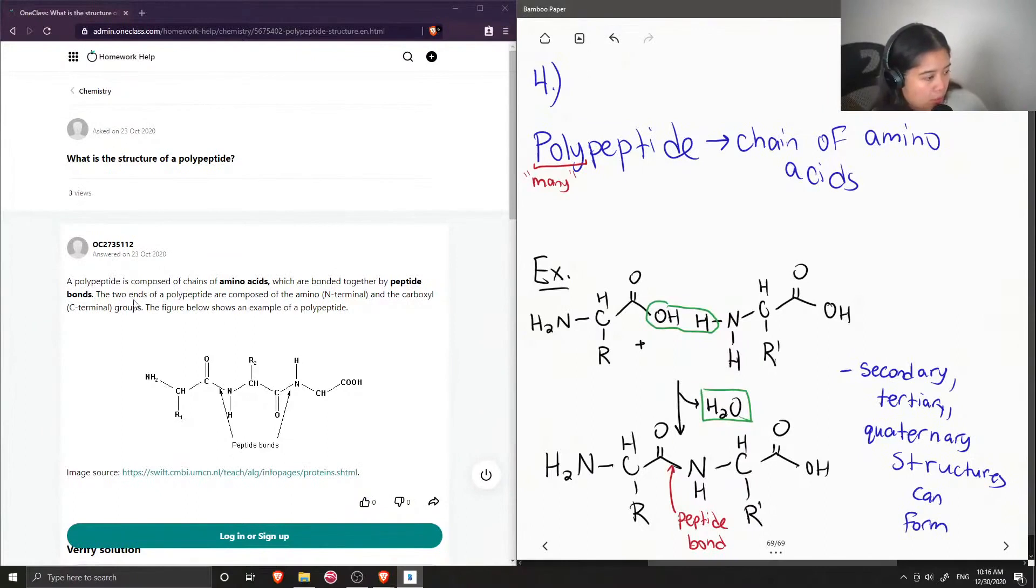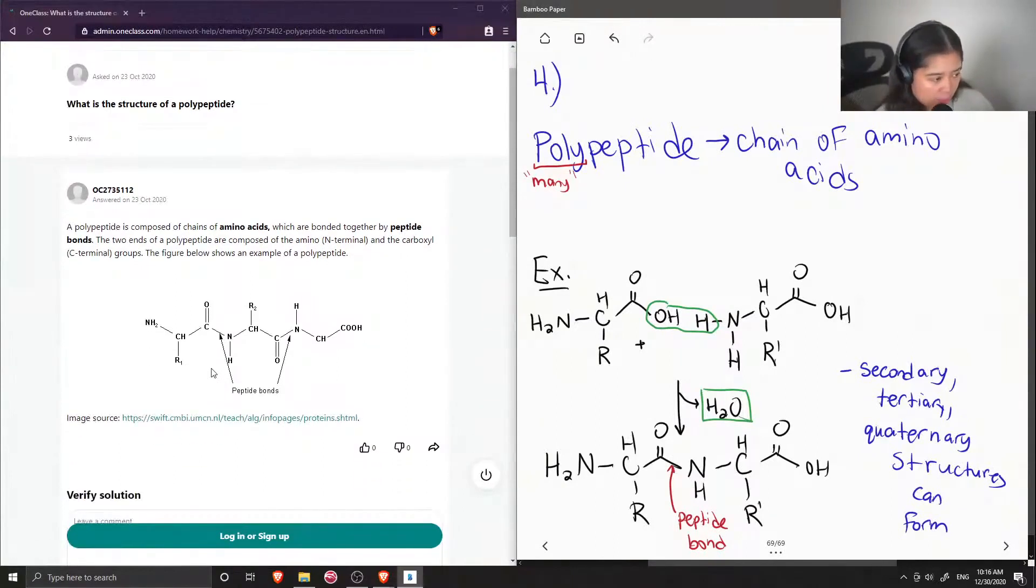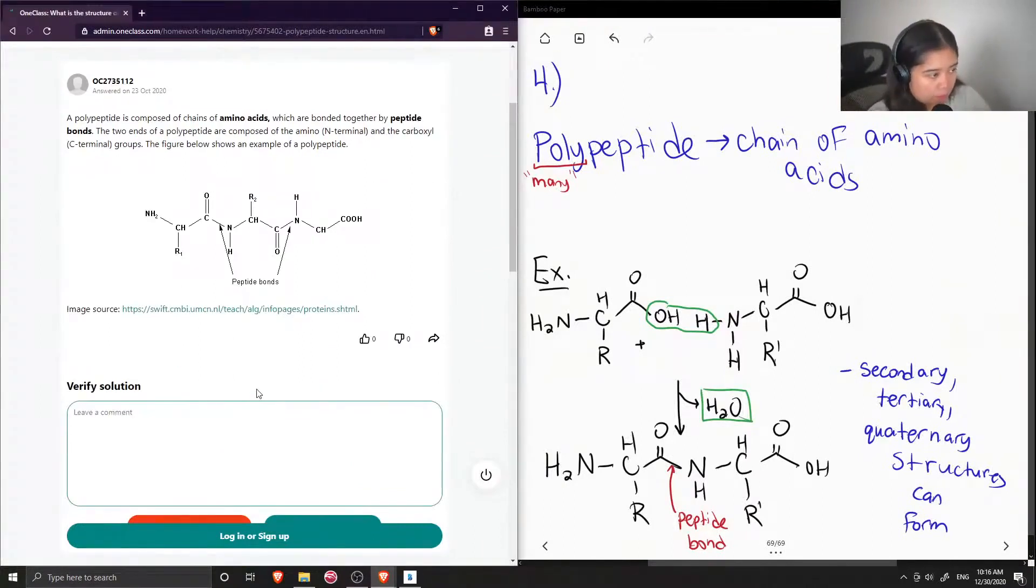The two ends of a polypeptide are composed of the amino N-terminal and the carboxyl C-terminal groups. The figure below shows an example of a polypeptide. Okay, so this solution is correct.